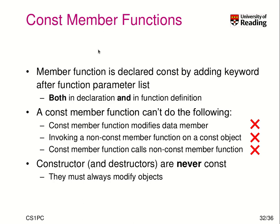Next we have const member functions. We already know we have to add the const keyword after the function parameter list, and it must be present in both the declaration and the function definition. Inside a const function you cannot modify data members — that's the purpose. You also cannot call non-const member functions, because they may change the object's state on your behalf. Note that constructors can never be const; it doesn't make any sense because they always modify objects.